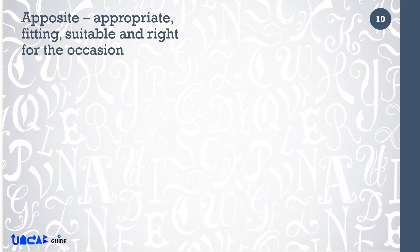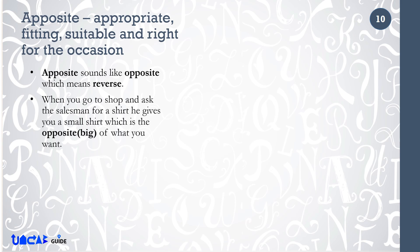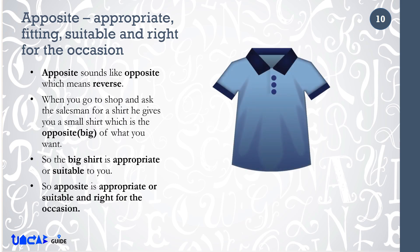Apposite means appropriate, fitting, suitable and right for the occasion. Apposite sounds like opposite, which means reverse. When you go to a shop and ask the salesman for a shirt, he gives you a small shirt which is the opposite of what you want. So, the big shirt is appropriate or suitable to you. So, apposite means appropriate, suitable and right for the occasion.